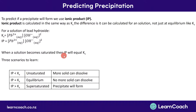When IP equals Ks, the solution is saturated. The best way to think of this is: IP is the amount of the two ions we are adding — that amount can be any amount. Ks, on the other hand, is the concentration of that pair of ions required in order for the solution to be saturated.